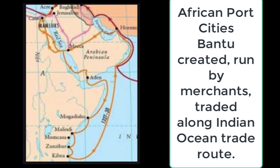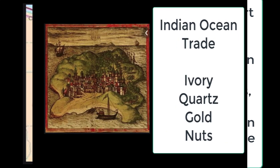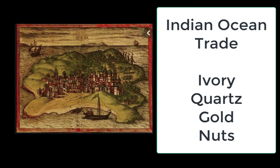The first example is the African port cities. The Bantu formed a number of city-states on the eastern African coastline. These city-states were pretty egalitarian, or equal — there was no significant noble class. Instead, merchants ran the cities. They traded along the Indian Ocean trade route, exchanging goods like ivory, quartz, gold, and nuts.